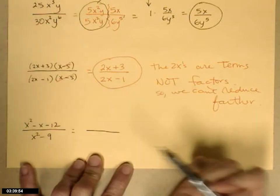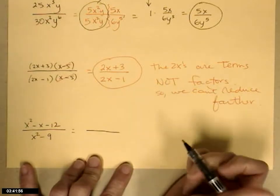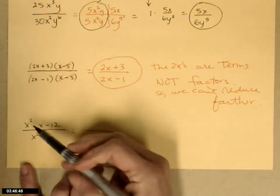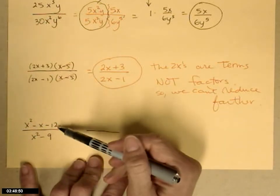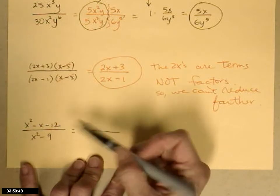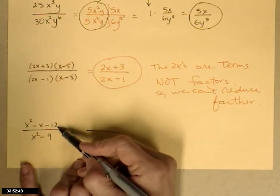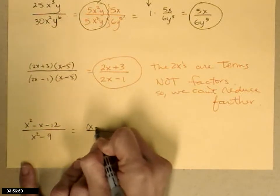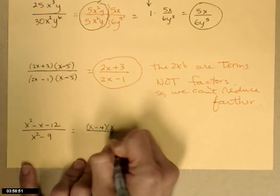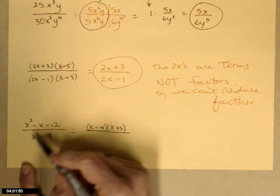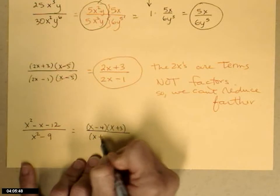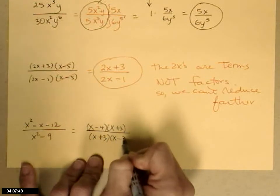So now I have to write the numerator in its factored form, something times something else, with no other pluses and minuses. So leading coefficient's 1, that means I only look at the factors of 12. So I need the pair of numbers that multiply to 12, subtract to give 1, so that'll be 4 and 3, so x minus 4 times x plus 3. The denominator is x squared minus 9, difference of squares is equal to x plus 3 times x minus 3.